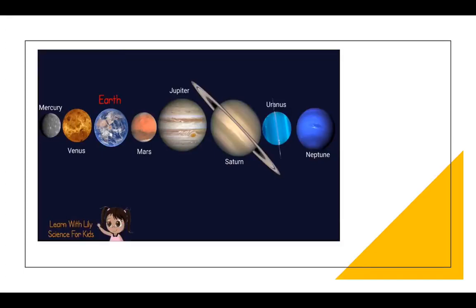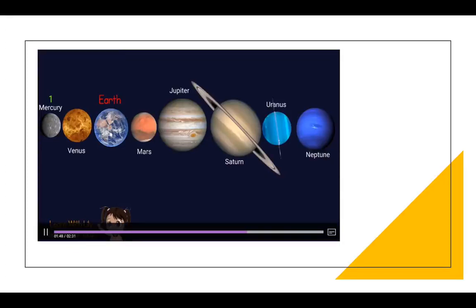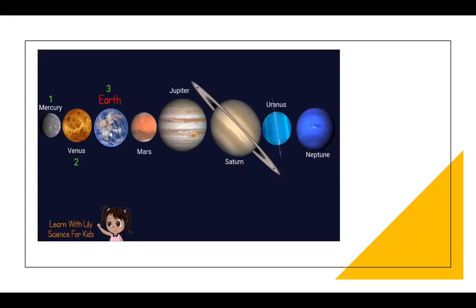Alright, let's count them all again. The 8 planets in our solar system. 1. Mercury. 2. Venus. 3. Earth. 4. Mars. 5. Jupiter. 6. Saturn. 7. Uranus. 8. Neptune.